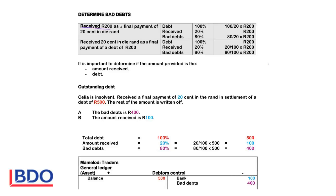Receive 200 rand as a final payment of 20 cents in the rand. If the person paid the total debt, he would pay 100%. The business only received 20% of the debt, therefore 80% must be written off as bad debts. The amount provided is the amount received, so next to the 20% you will show that 200 rand equals 20%. If you want to calculate the bad debts,